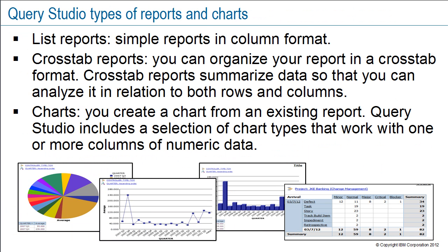You can use Query Studio to create these types of reports and charts. First, list reports are simple reports in column format. You can insert and format columns, move them around, add a report title, and change fonts. Second, crosstab reports show data in both rows and columns so that you can analyze the data in relation to both. The values at the intersection points of rows and columns show summarized information rather than detailed information.